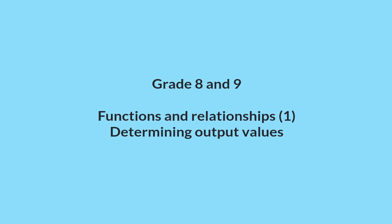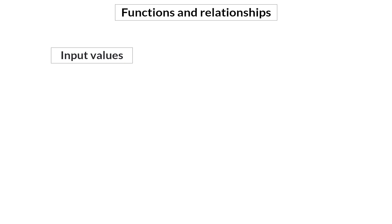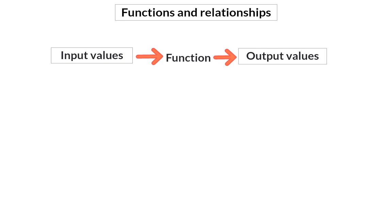In this video we are starting with functions and relationships by looking at how to determine output values. A function is the relationship between two sets of values. The starting values are our input values, and on those we apply the function to determine the output values. The function can be described or given in different ways: either in words, in a flow diagram, in a table, or as an equation.